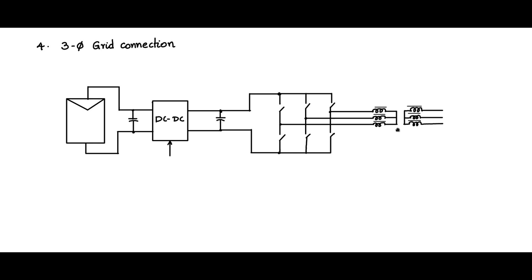The primary and secondary windings are all coupled, forming a star-star connected transformer. The primary is connected in star with one end of each winding connected to a common point. The secondary is likewise connected in star. From the secondary, the output passes through three separate inductors and connects to the R, Y, B phases of the three-phase grid.